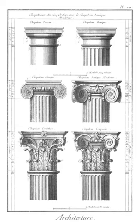Cancellus (plural: cancelli): barriers which correspond to the modern balustrade or railing, especially the screen dividing the body of a church from the part occupied by the ministers — hence chancel. The Romans employed cancelli to partition off portions of the courts of law.